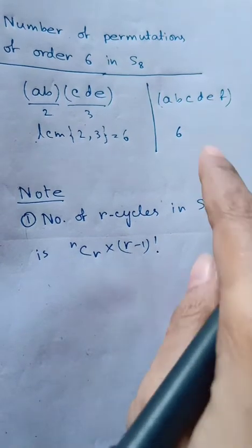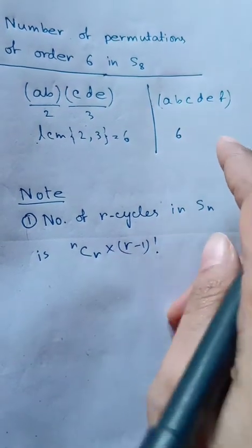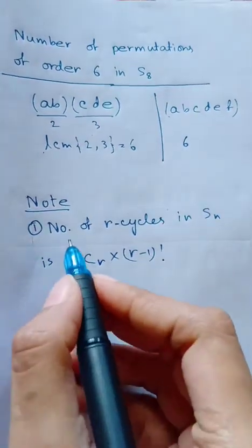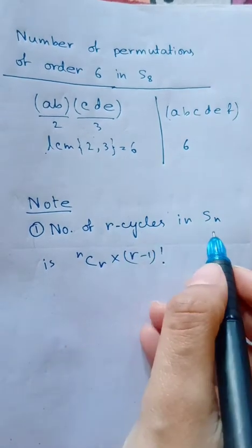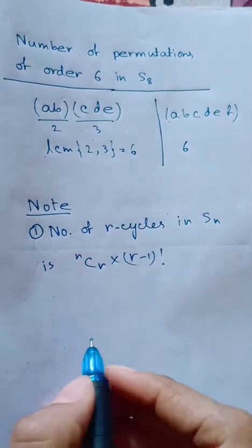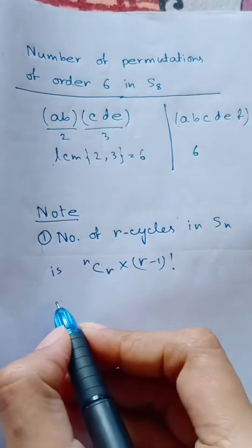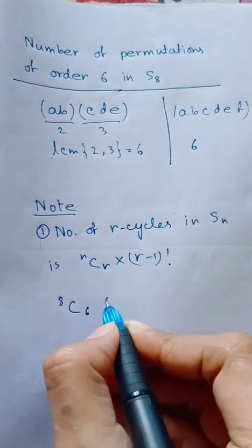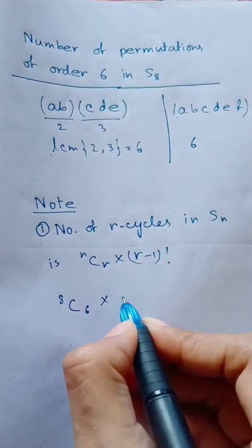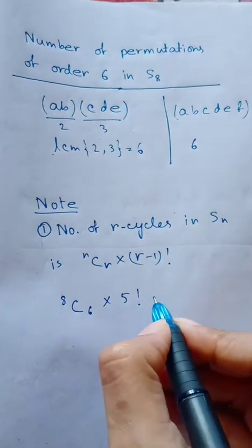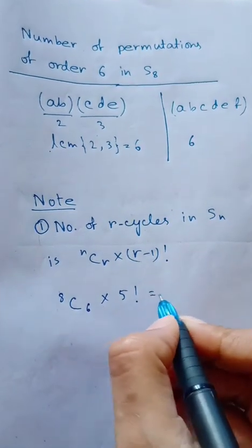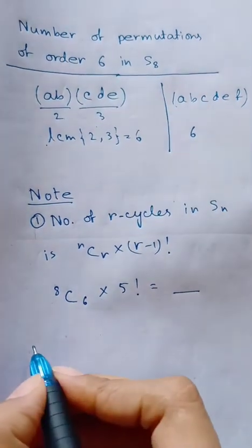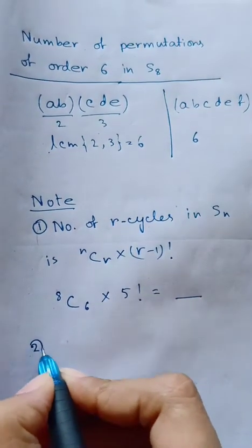So the number of 6-cycles in S₈ is ⁸C₆ times (6−1) factorial, which is ⁸C₆ times 5 factorial. You can calculate this easily.